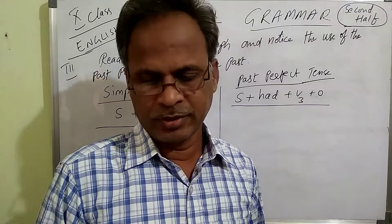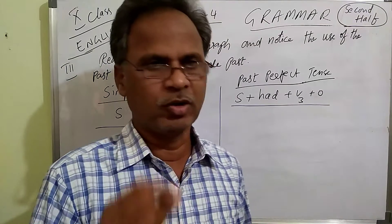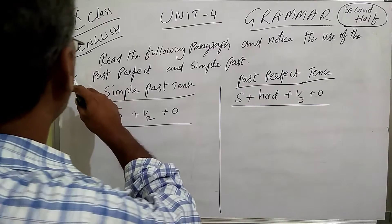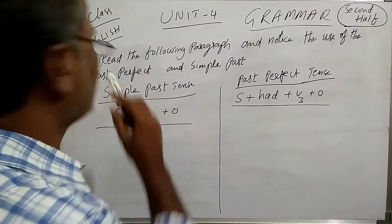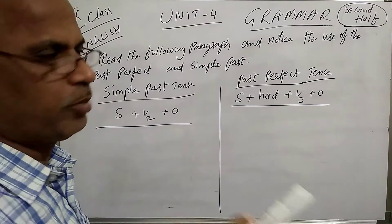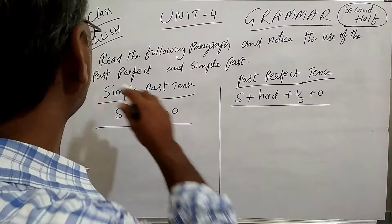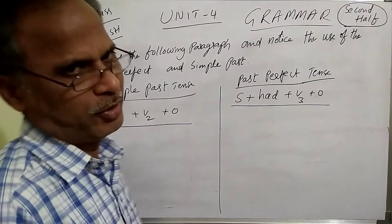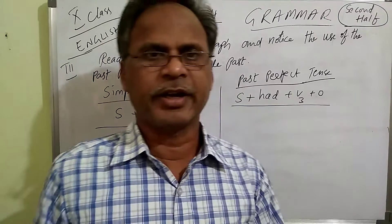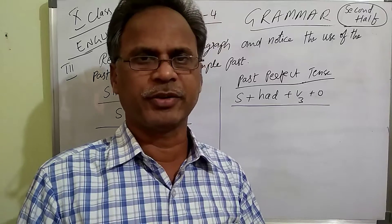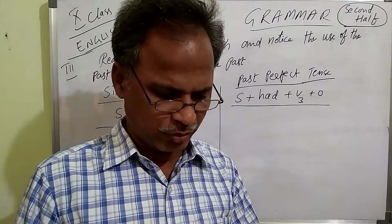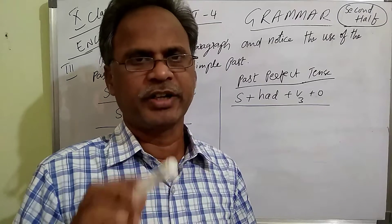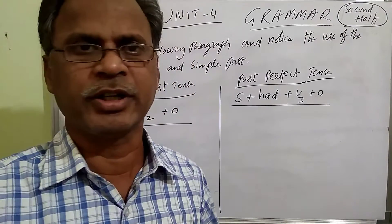Now open your textbook — it is better to have the textbook in your hands. We are coming to the third bit, which follows part B. The third bit says: read the following paragraph and notice the use of the past perfect and simple past tense. Some sentences are given with underlined words; you have to notice them and identify which sentence is in simple past tense and which is in past perfect.